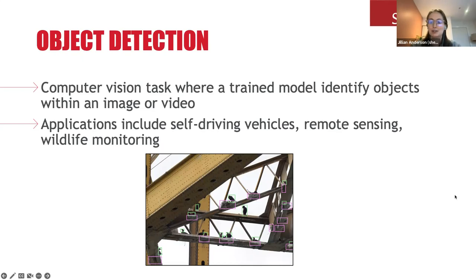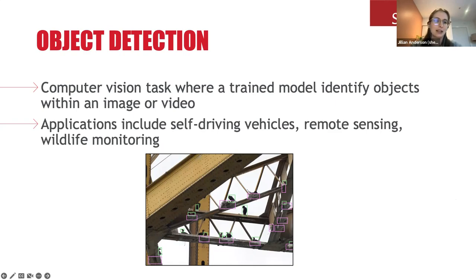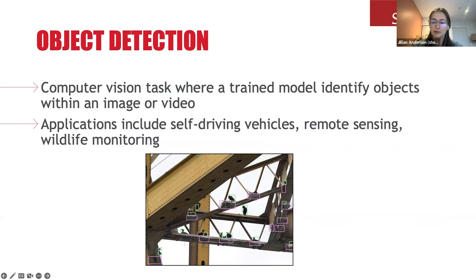Some typical examples relevant in popular culture are self-driving cars, where object detection is used to help the car avoid hitting pedestrians and animals, recognize stop signs and traffic lights, as well as staying on the road.